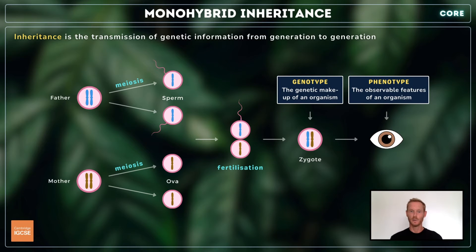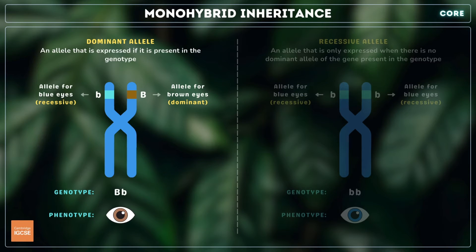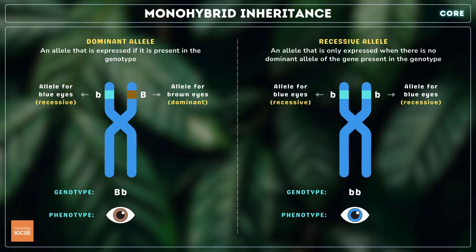Not all alleles present in the genotype are expressed in the phenotype. A dominant allele, represented by a capital letter, is an allele that's always expressed if it's present in the genotype. A recessive allele, represented by a lowercase letter, is an allele that's only expressed when there is no dominant allele of the gene present — in other words, a recessive allele must be inherited from both parents for the trait to be visible in the phenotype.